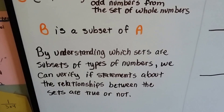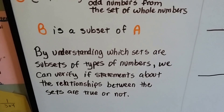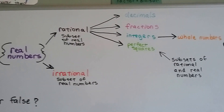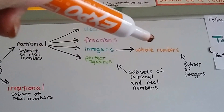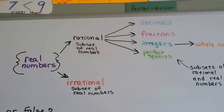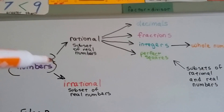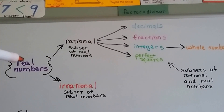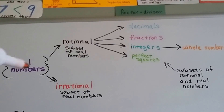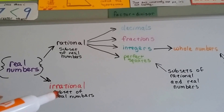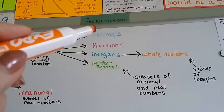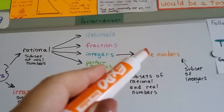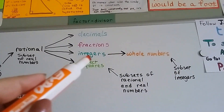By understanding which sets are subsets of types of numbers, we can verify if statements about the relationships between sets are true or not. We've got real numbers, rational numbers, and irrational numbers. Out of the rational numbers, we've got decimals, fractions, integers, and perfect squares, and then whole numbers coming out of integers. Rational and irrational numbers are subsets of real numbers, and decimals, fractions, integers, and perfect squares are all four subsets of rational numbers. Whole numbers are a subset of the integers.